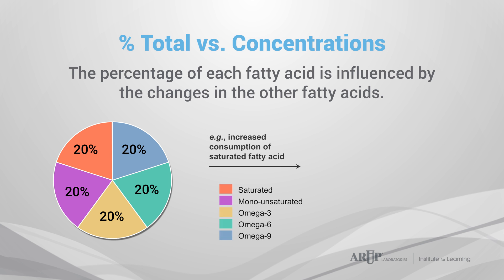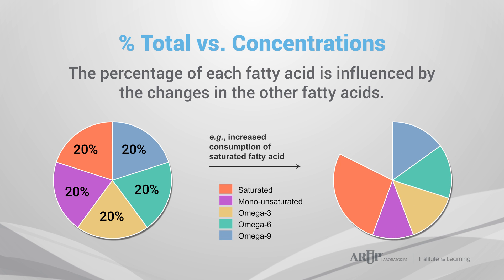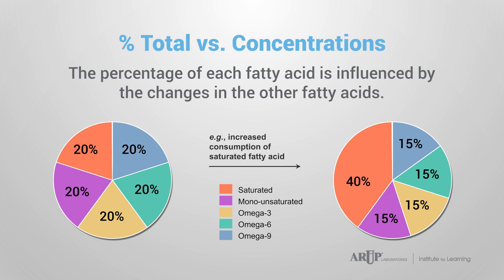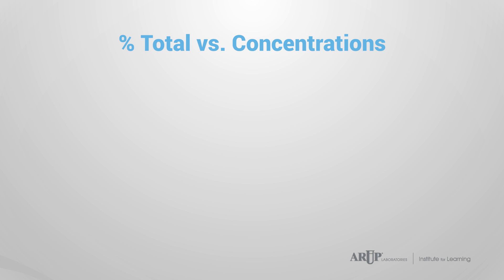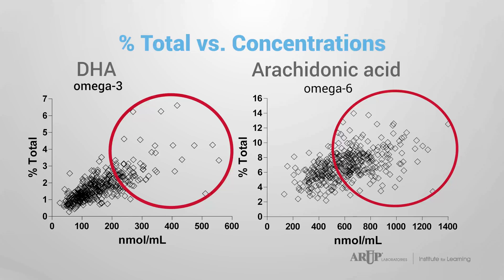For example, increasing consumption of a saturated fatty acid would increase its percentage and, at the same time, decrease the percentages of all other fatty acids, even though their concentrations do not change. The correlation between absolute and relative values is also not quite linear, especially at higher concentrations, as shown here for DHA and arachidonic acid. This might lead to inconsistencies in clinical interpretation between these reporting methods.